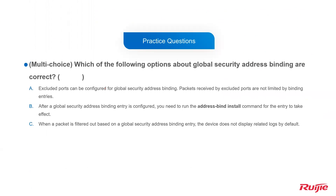Now let's look at a review question: Which of the following options about global security address binding are correct? Option A: Excluded ports can be configured for global security address binding, and packets received by excluded ports are not limited by binding entries. This is true — it describes the basic behavior of excluded ports. Option B: After the global security address binding entry is configured, you need to run the 'address bind install' command for the entry to take effect. Yes, this is true — this command applies the entries to all interfaces.